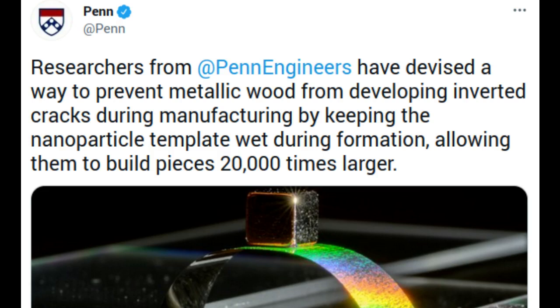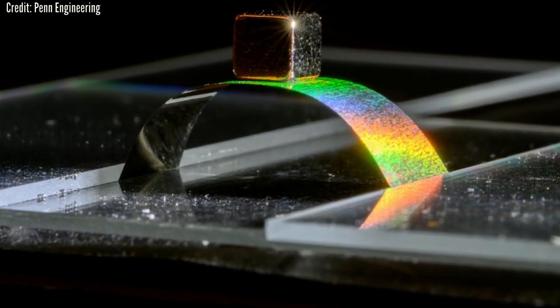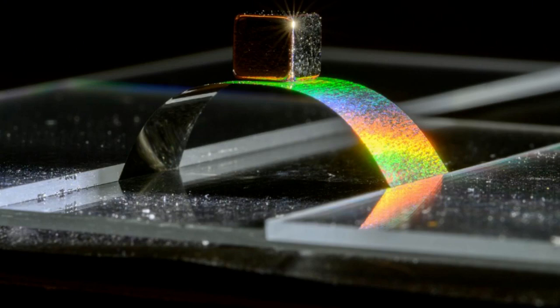For the past three years, engineers at the University of Pennsylvania School of Engineering and Applied Science have been developing a type of material they have dubbed metallic wood. Their material gets its useful properties and name from a key structural feature of its natural counterpart, porosity.